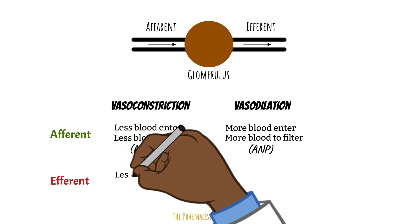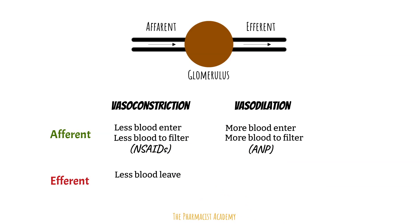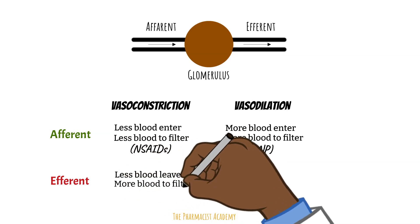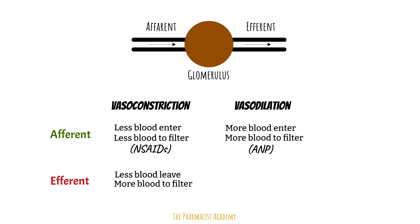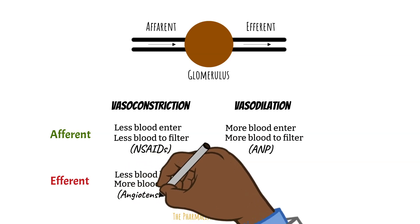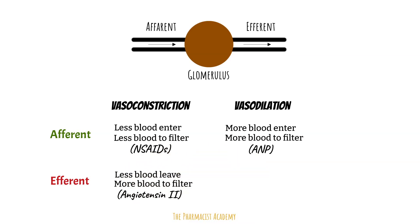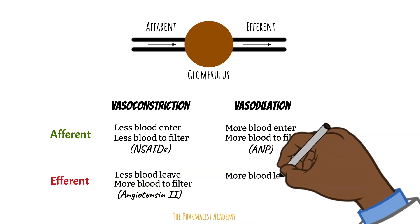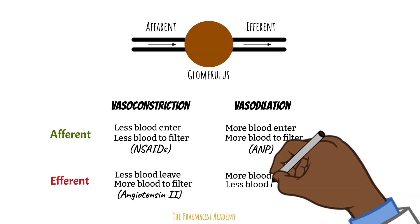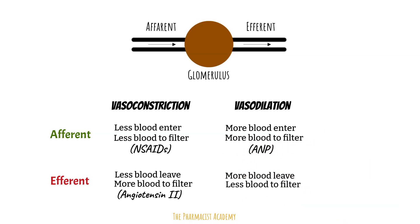When the efferent constricts, less blood will leave, so there's more blood in the middle of the glomerulus to be filtered. This is an effect that can be caused by angiotensin II. When the efferent dilates, more blood leaves the glomerulus, so there is less blood to be filtered. And this is something that we see with ACE inhibitors and ARBs.